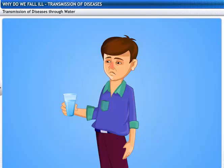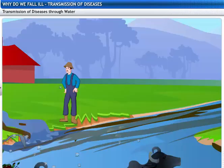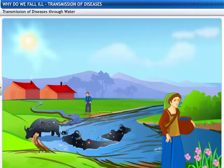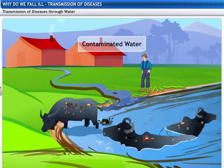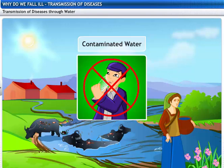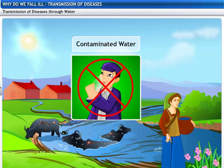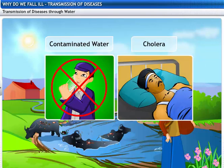Diseases can also spread through water. When the excreta of animals and humans suffering from infectious diseases get mixed with drinking water, it becomes contaminated. This kind of water is not healthy for drinking. Cholera, for instance, is a waterborne disease.